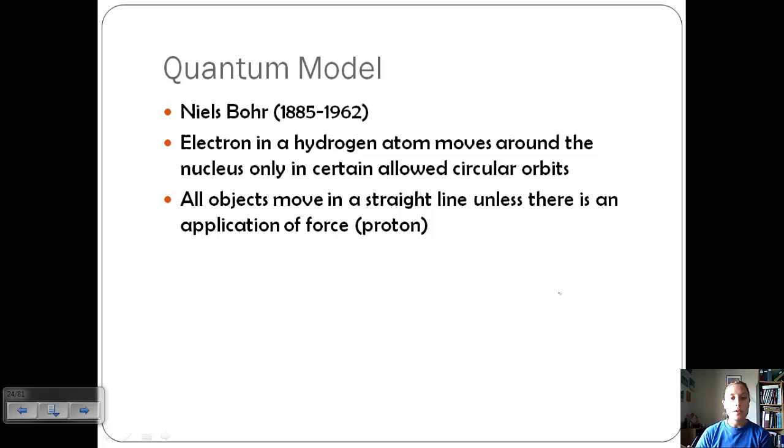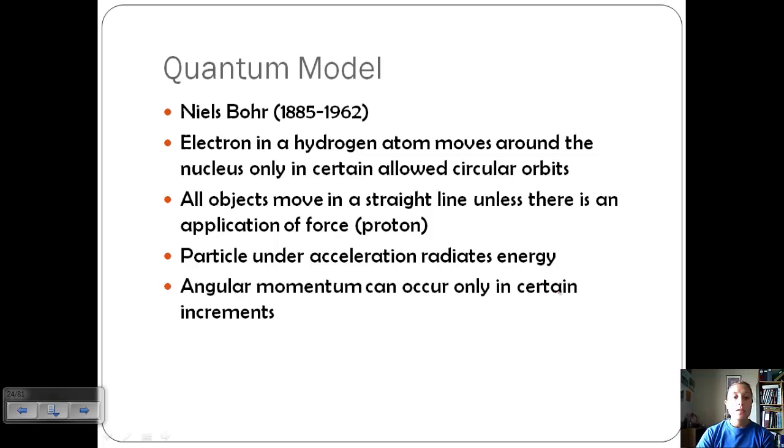These electrons are going to want to move in a straight line but then we have these protons putting this pull on the electrons keeping them in this orbit. Because they're going in this circle they have acceleration because remember acceleration is a change in velocity. Change in velocity is a change in the speed or direction. So since they're changing direction that's accelerating. Particles under acceleration radiate energy. So we've got this circular motion and we learned that angular momentum can only occur in certain increments. So there's that quantized part again.